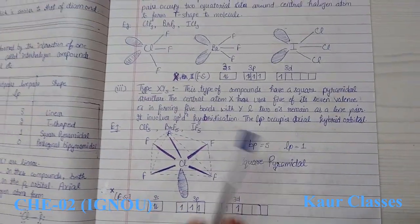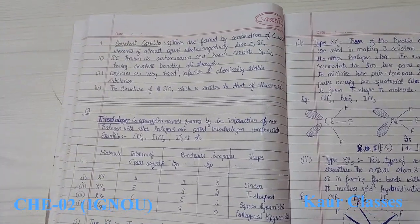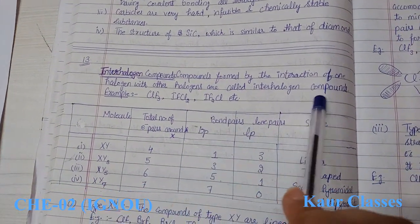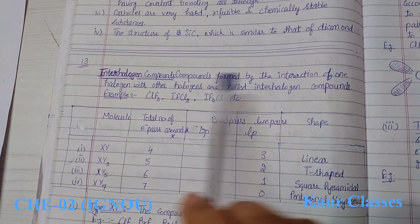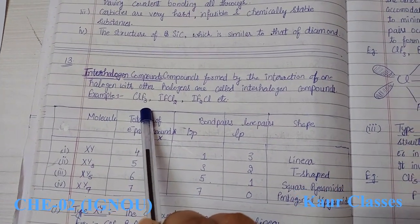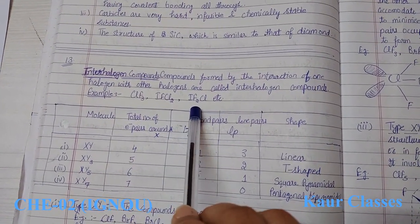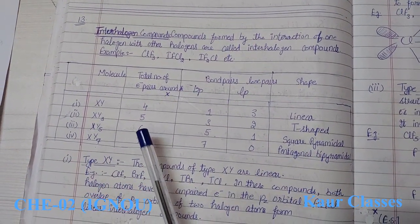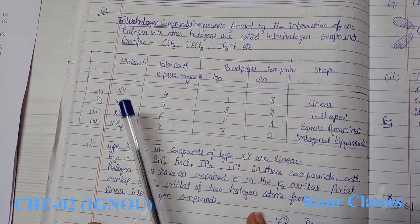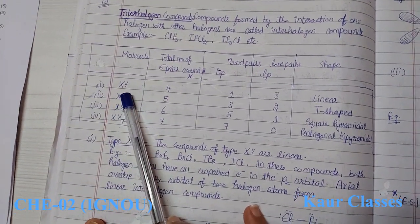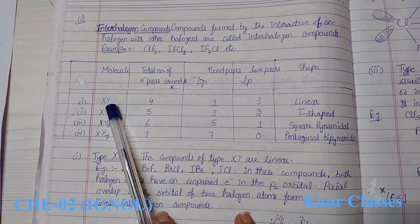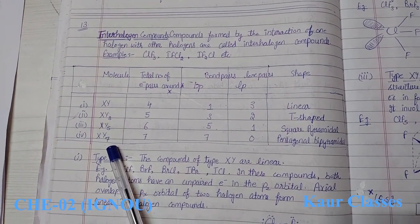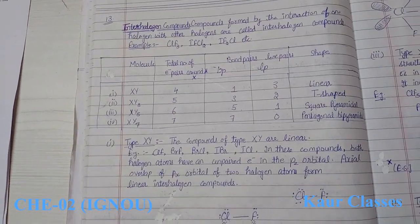Interhalogen compounds are compounds formed by the interaction of one halogen with another halogen. For example, ClF2, IF, 2ClF, etc. There are four different types: XY, XY3, XY5, and XY7. We will discuss all four one by one.